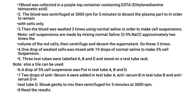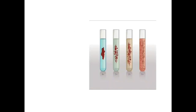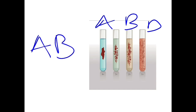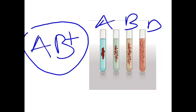If there is clumping in tube B and clumping in tube D but not in tube A, the blood group is B positive. Clumping in tube D indicates Rh positive; no clumping in tube D indicates Rh negative. For example, if there are clumpings in all three tubes A, B, and D, the blood group is AB positive. If tube D had no clumping, it would have been AB negative.